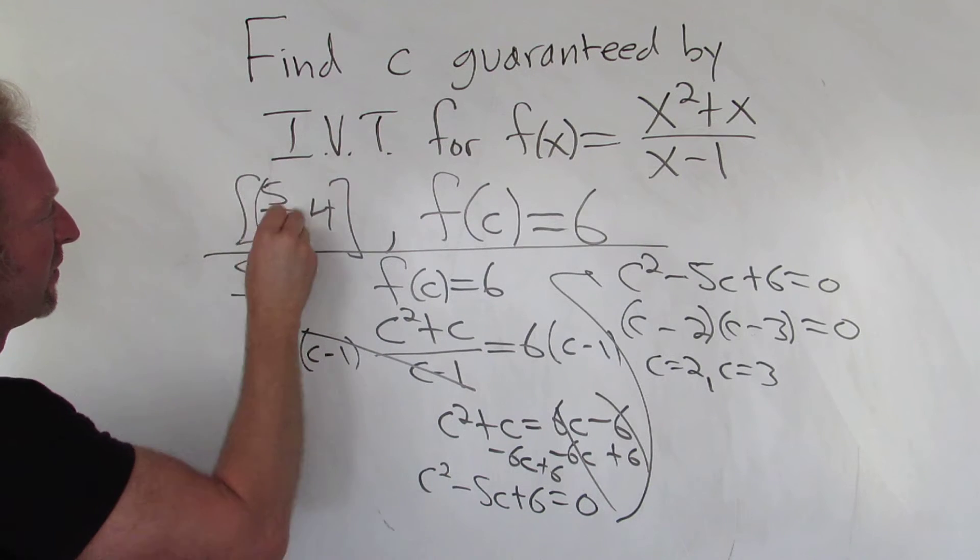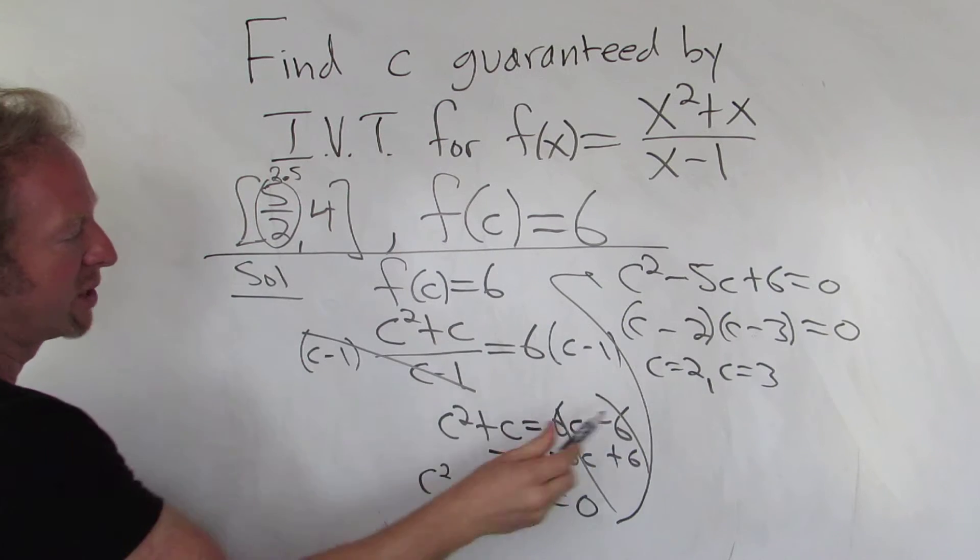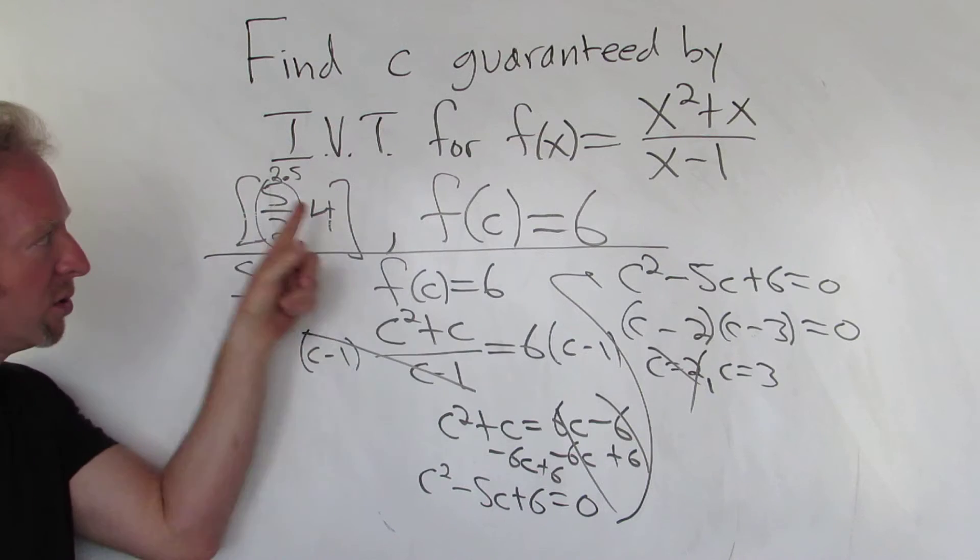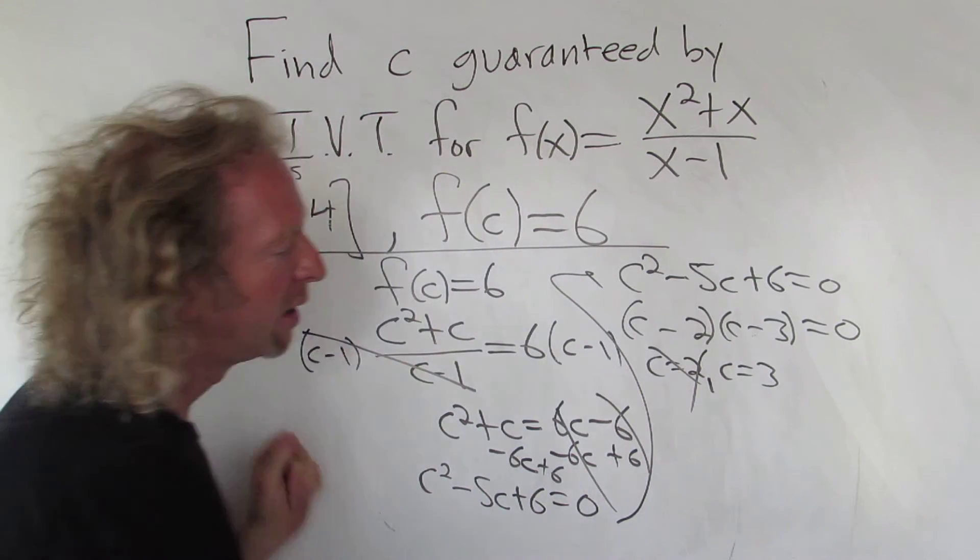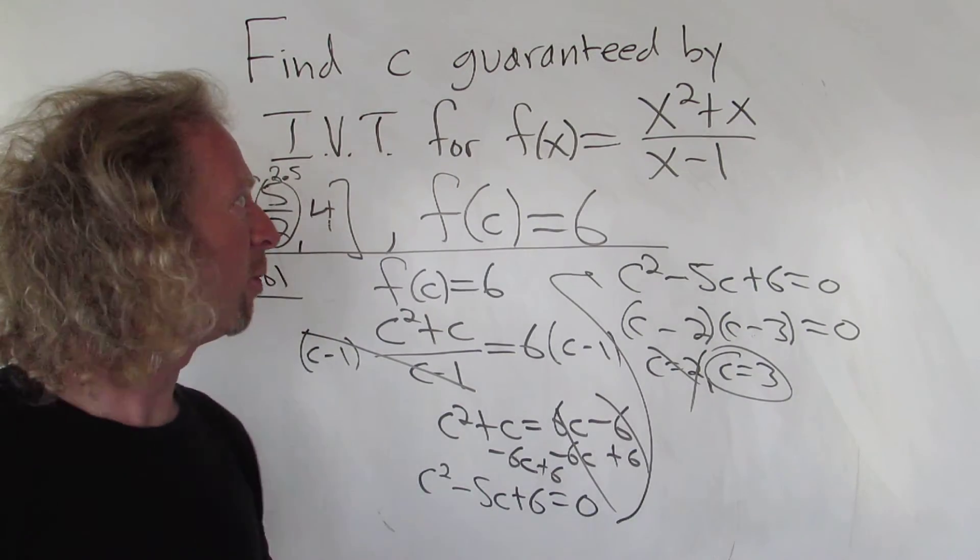So this 5 halves is really 2.5. It's 2 and 1 half. So 2 is not going to work, right? Because 2 is not between these numbers, right? It's got to be between these numbers to work. So 2 is smaller than 2.5. So it's not between 2.5 and 4. So 3 is the one that will work. So I hope that helps.